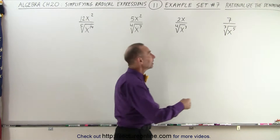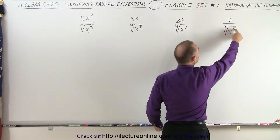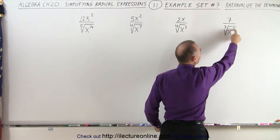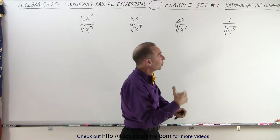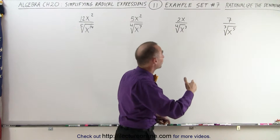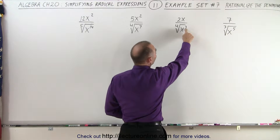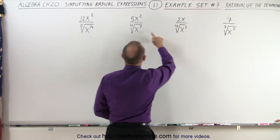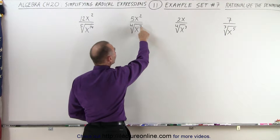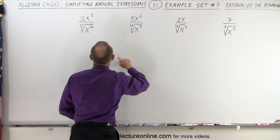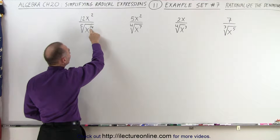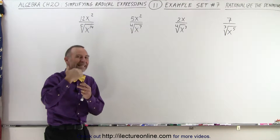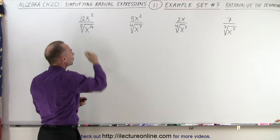The objective is that the power should be a multiple of the root. So instead of x to the fifth we want x to the sixth, because six is a multiple of three. Here we want a four because four matches the root. Here we want an eight because eight is a multiple of four, and here we want 15 because 15 is a multiple of three. So we're looking for the next multiple of the root.